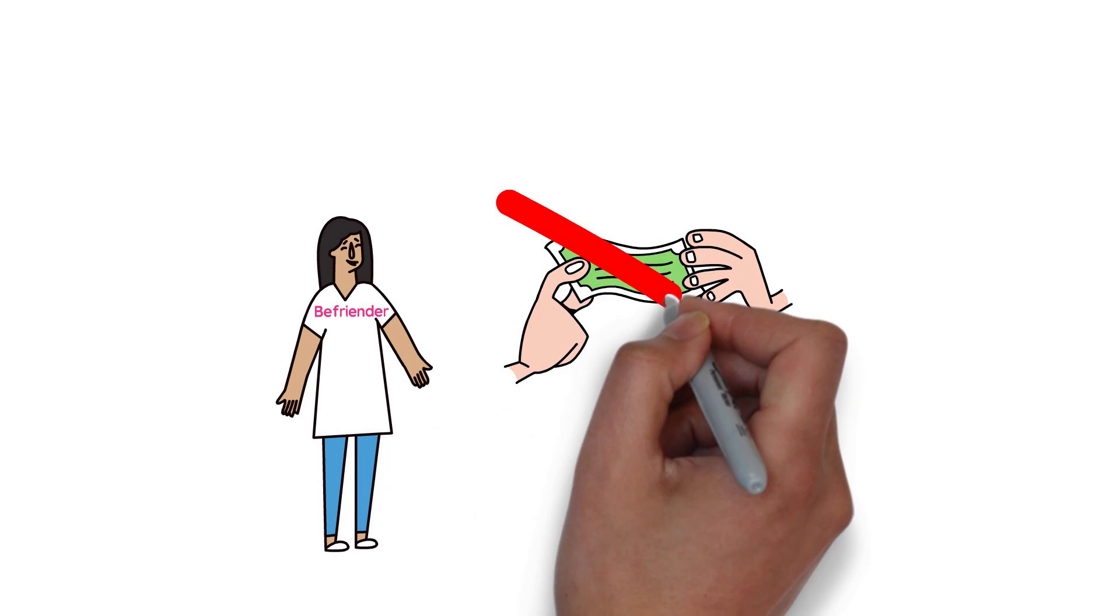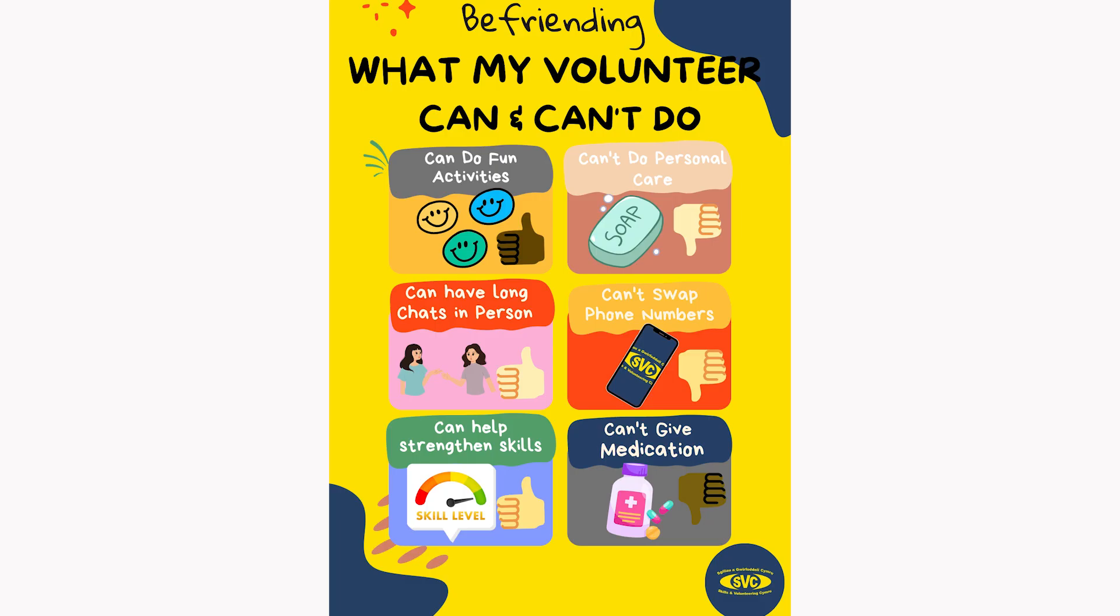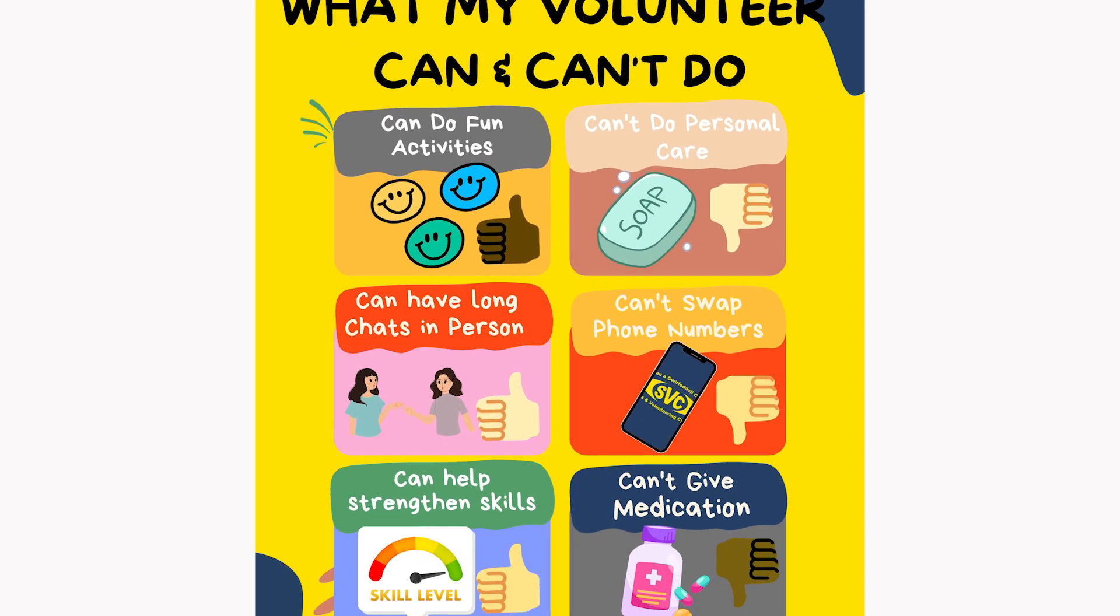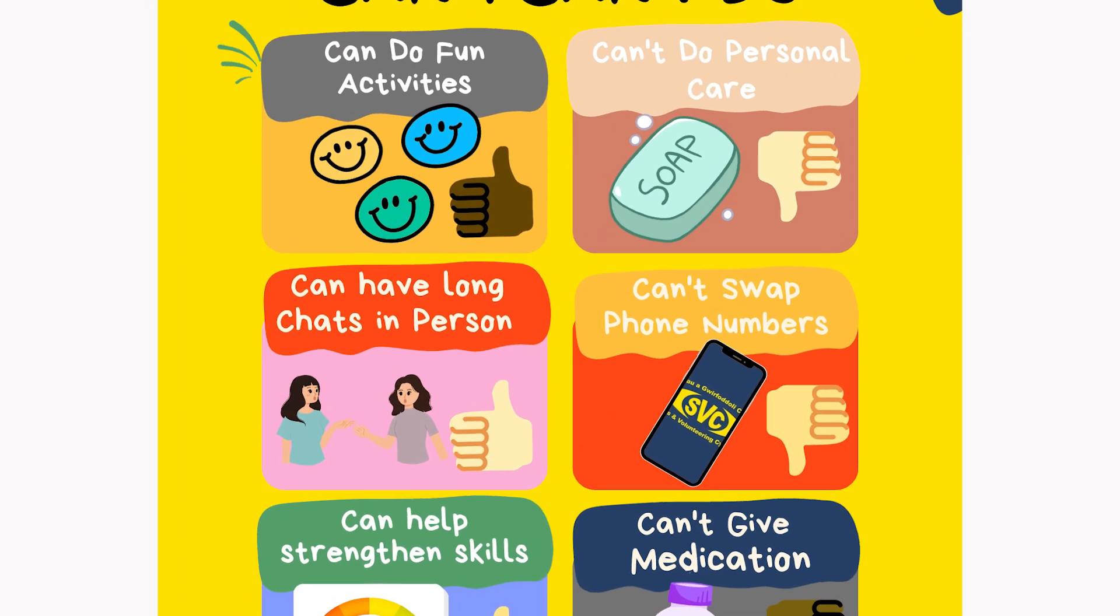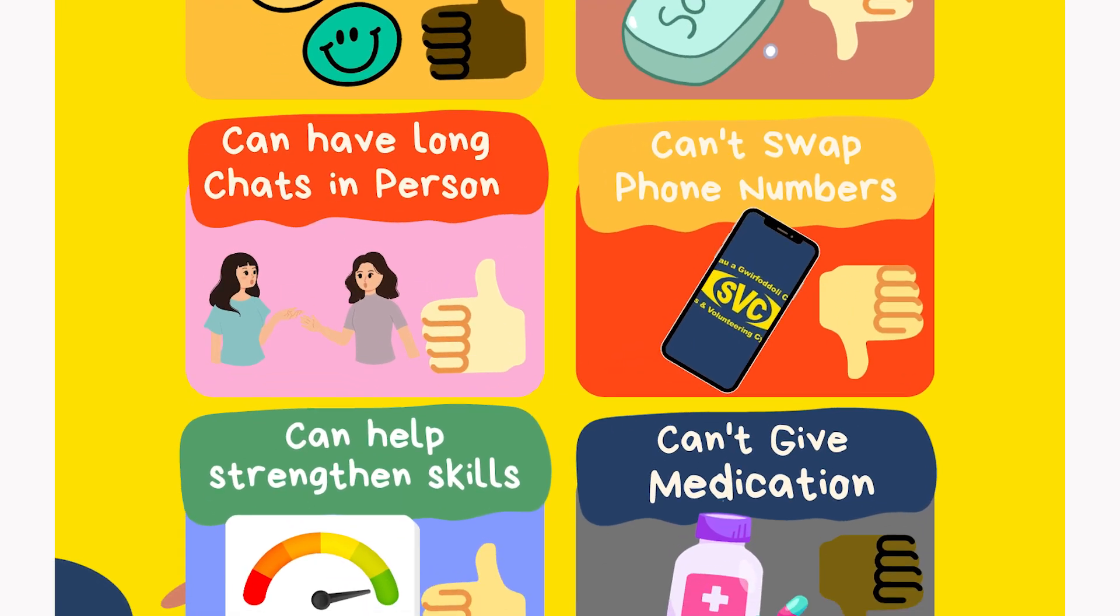Volunteers aren't paid which means that they can't do all the things that staff can do. This poster shows the things that they can and can't do and this is to keep everyone safe as they haven't had the same training as Innovate support staff.